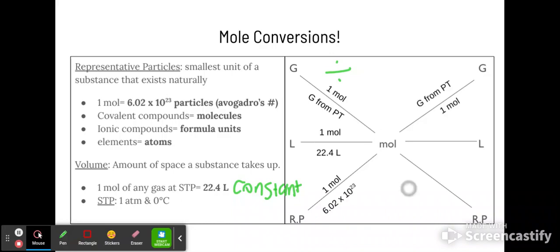If you are going from moles to something else, to grams, liters, or representative particles, if you're going away from moles, you multiply. So you can go from grams to moles, you can go from moles to liters, you can go from grams to moles to liters in a two-step problem. So you just have to remember how to set this up with what's called a T table, which we will see in a second.